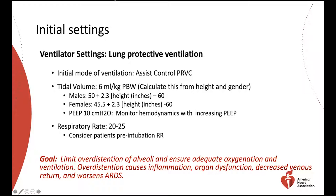Although many ventilator settings may be used to manage patients with COVID-19 respiratory failure, consider initiating assist control volume control ventilation with an initial tidal volume of 6 milliliters per kilogram, calculated as predicted body weight. A reasonable initial PEEP setting is 10 centimeters of water to recruit alveoli. With higher PEEP levels, carefully monitor the patient's hemodynamics, which may be compromised by decreased venous return.